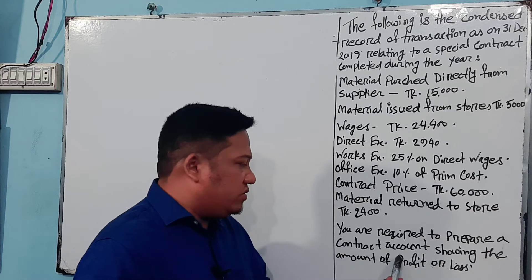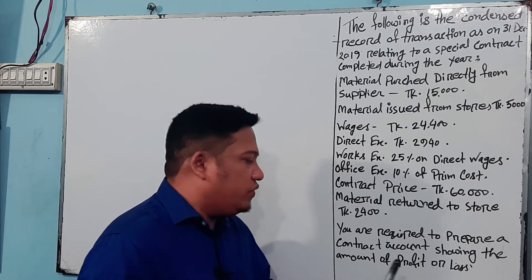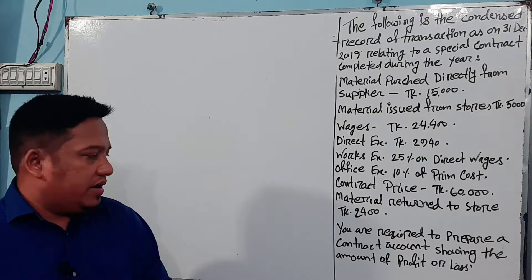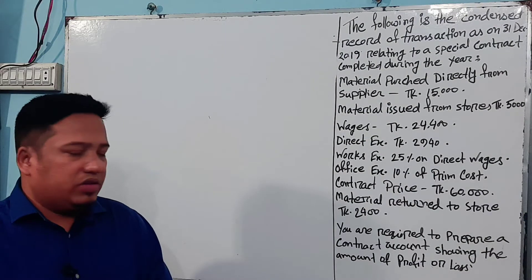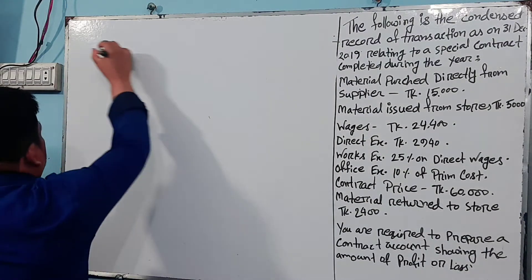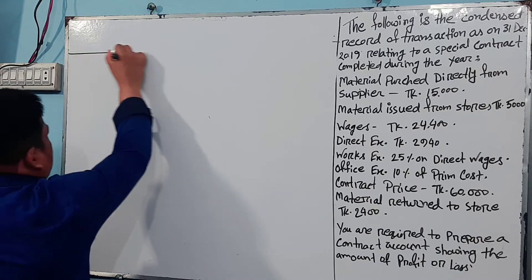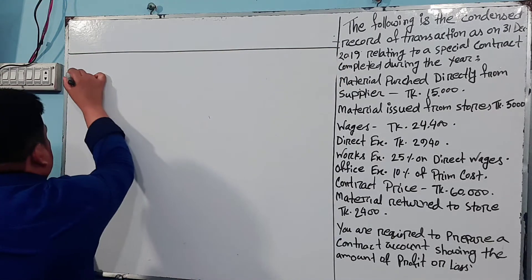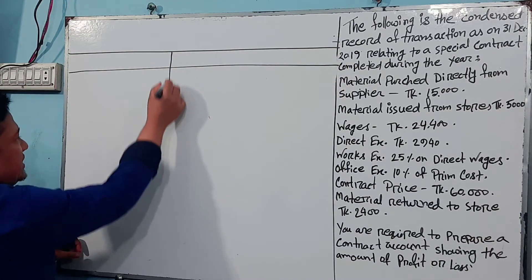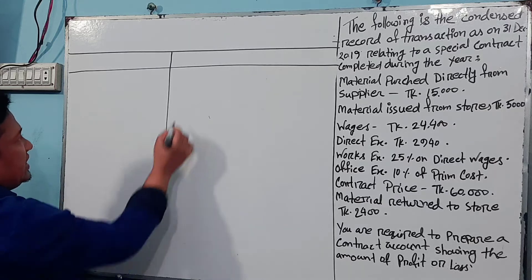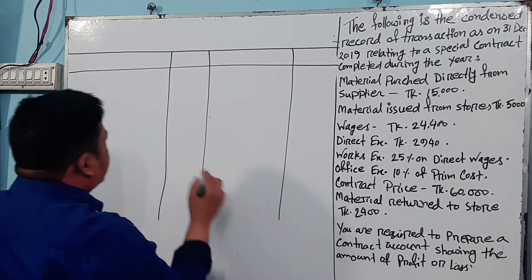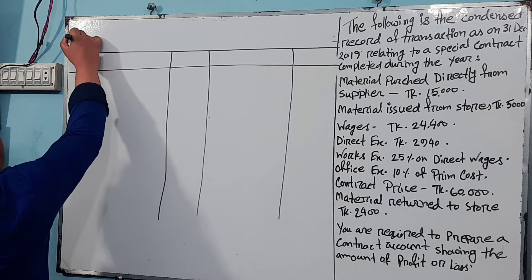You are required to prepare a contract account showing the amount of profit and loss. We are going to show the contract account — let me first show you the arrangement of the contract account format.